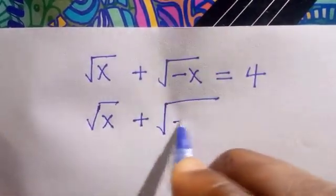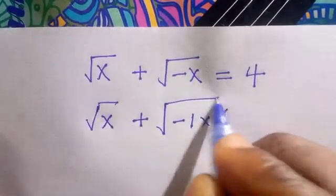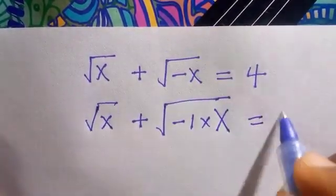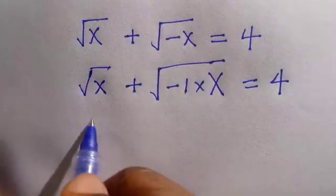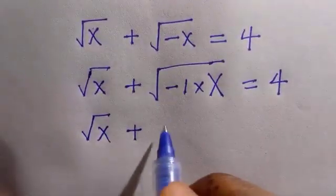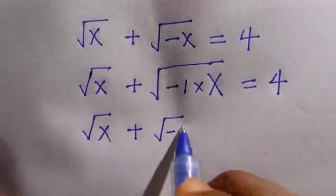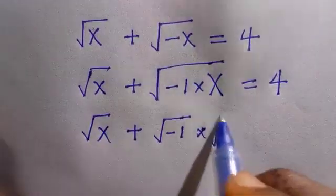For this one, I can separate this as minus 1 multiplied by x equals to 4. So if this is root x plus, by separating this, we have root of minus 1 multiplied by root x equals to 4.